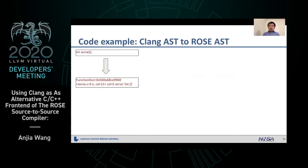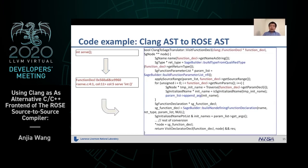This is an example for converting Clang AST to Rose AST. First, we have a function declaration. We use Clang to create this function declaration node. Then in Rose, we use build functions to traverse the Clang AST node and create a corresponding Rose AST node — for example, the function name, the parameter list, the return type, and so on.